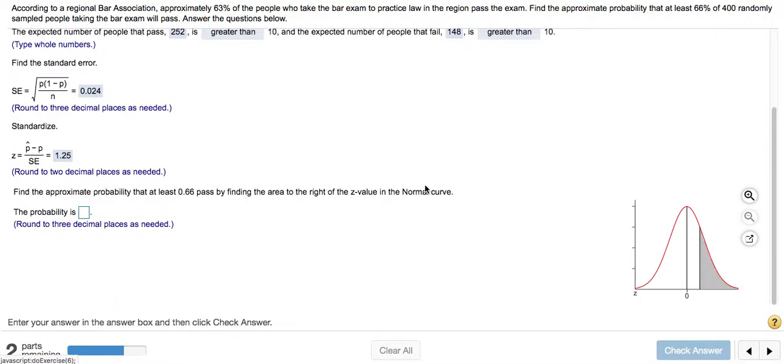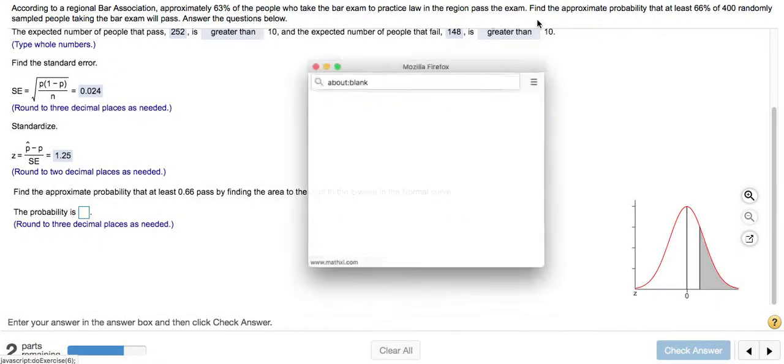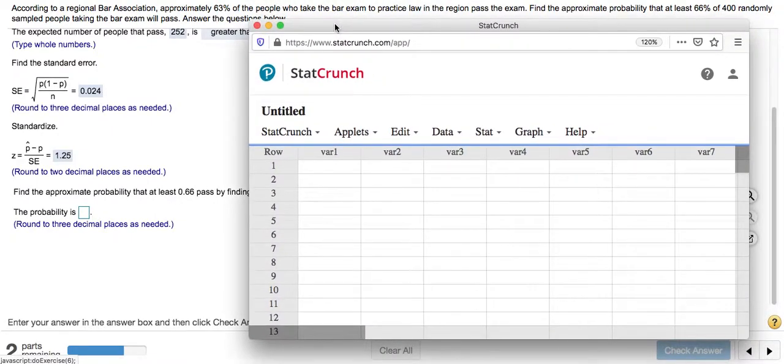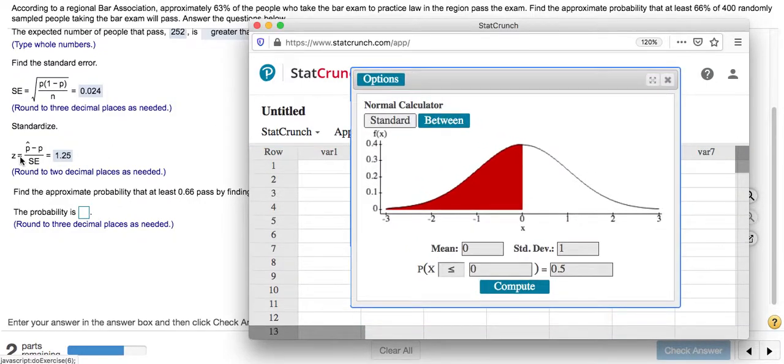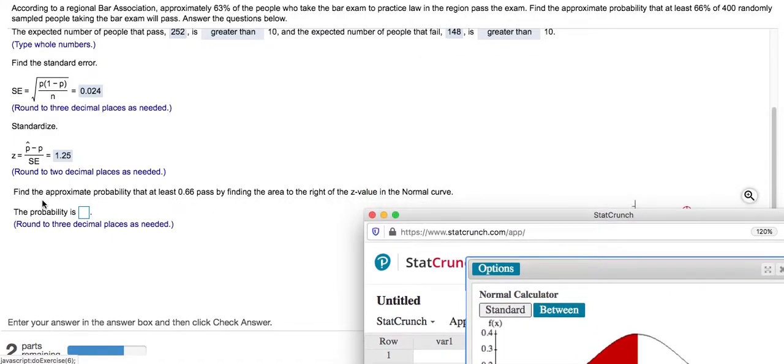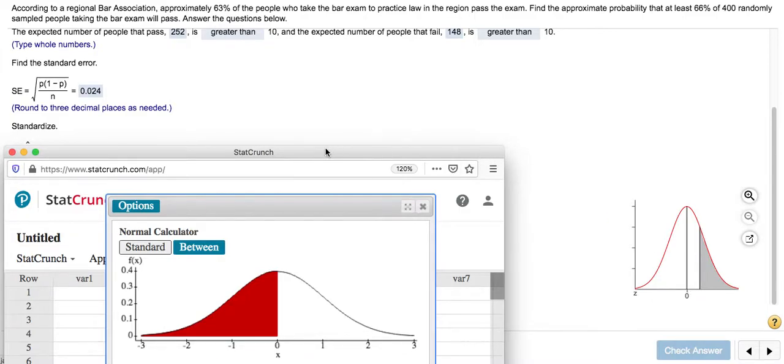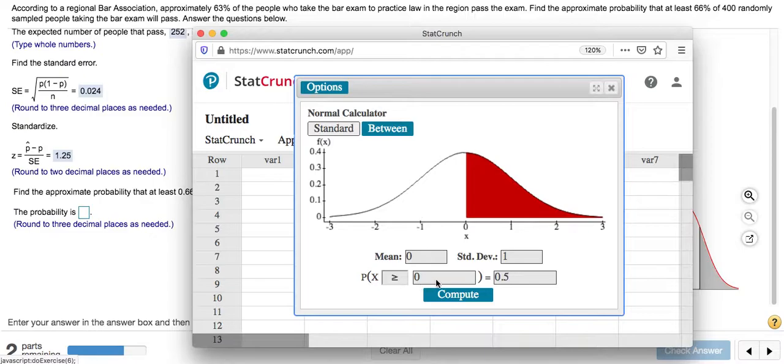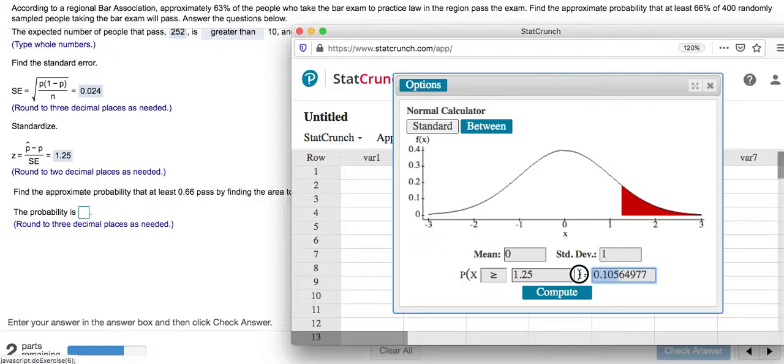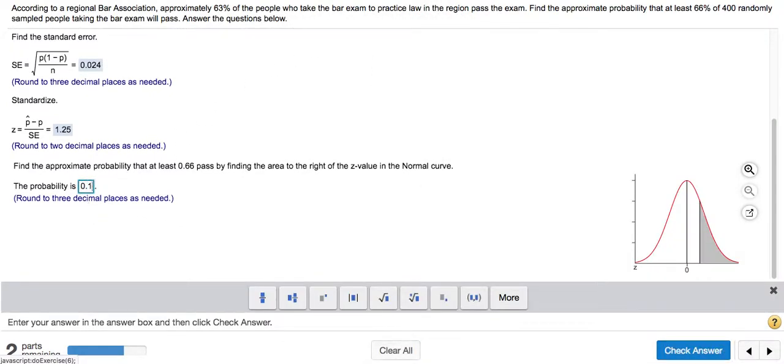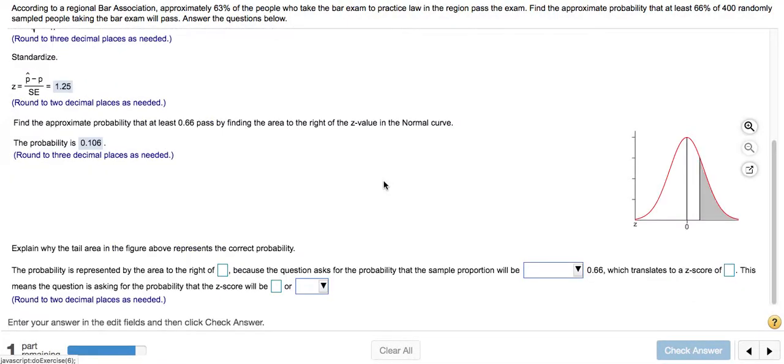Now we're asking for the probability, and this is something you can use StatCrunch for. The nice thing about using a z-score is we can now just use the normal calculator. So if I go to Stat, Calculators, and select Normal, because we're talking about a z-score, we're talking about a distribution with a mean of 0 and a standard deviation of 1. Find the probability that at least 0.66 pass - that's like the area to the right. We're going to choose greater than or equal to, and I want to put in my z-score of 1.25. And this is the probability here. Rounded to three decimal places, that's 0.106, so about 10.6%.